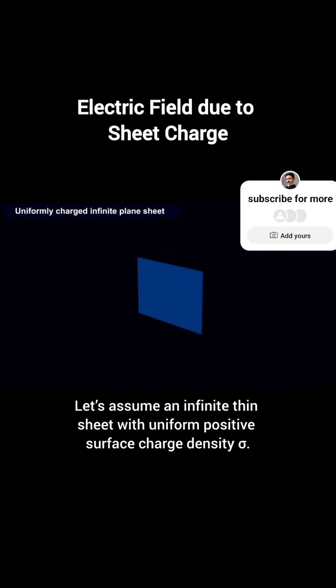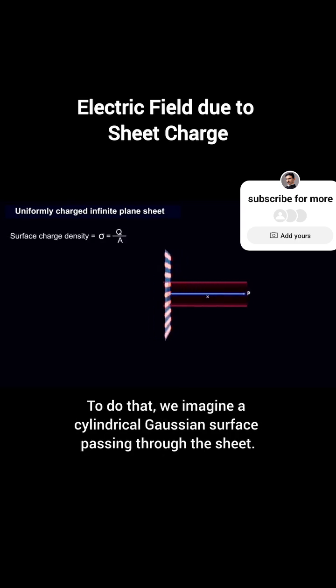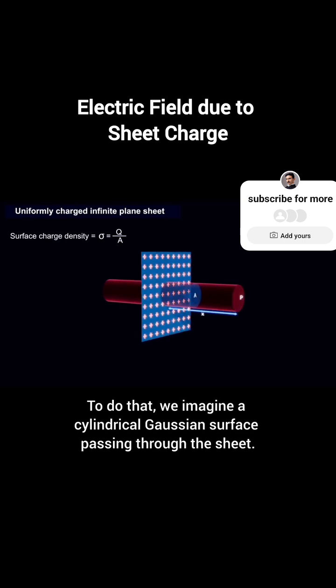Let's assume an infinite thin sheet with uniform positive surface charge density sigma. We want to find the electric field at a point at distance x from the sheet. To do that, we imagine a cylindrical Gaussian surface passing through the sheet.